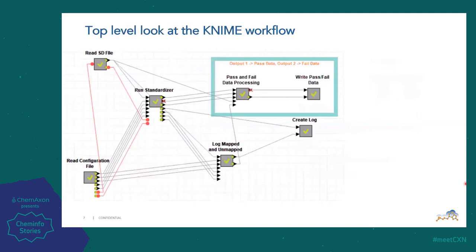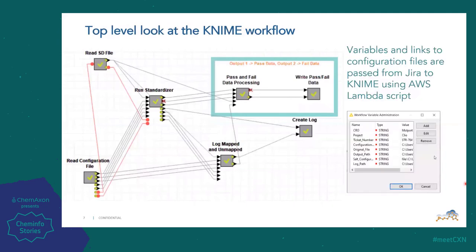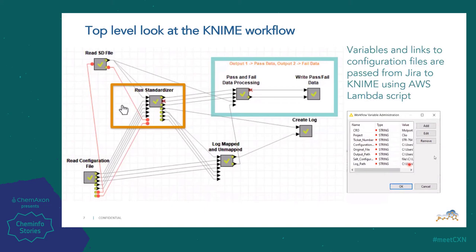Here's a top level look at our KNIME workflow. There are many variables loaded within JIRA that get passed along to KNIME, which helps the system know exactly how to process the SD file. On the right-hand side we have a CRO — you can put in any vendor you buy things from. We have the project as well as the ticket number so that we can very quickly connect exactly where the SD file comes from and how to configure the renaming of the specific fields. There are other files and paths passed through as well. If we open up the run standardizer, this is where the majority of all the KNIME nodes reside.